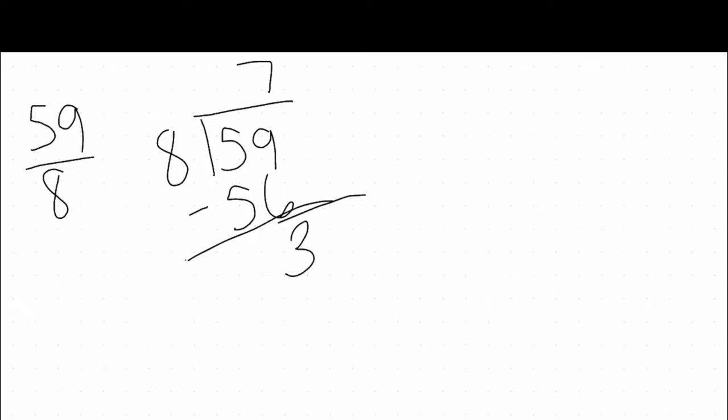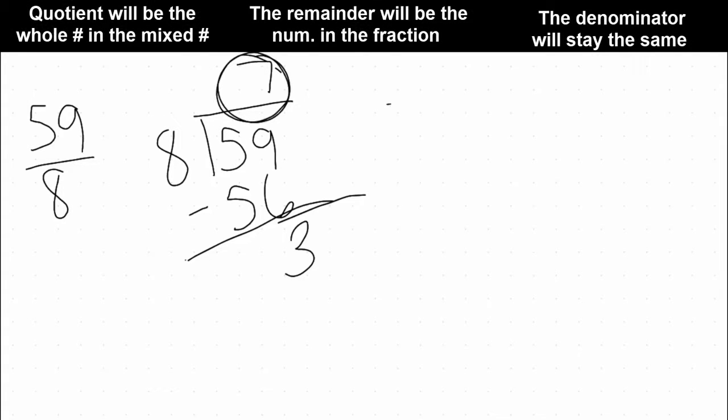This is how you write your number. Our quotient, this 7 up here, is going to be our whole number in our mixed number. Our remainder is going to be our numerator. And our denominator is going to stay the same, so our denominator is going to stay an 8.